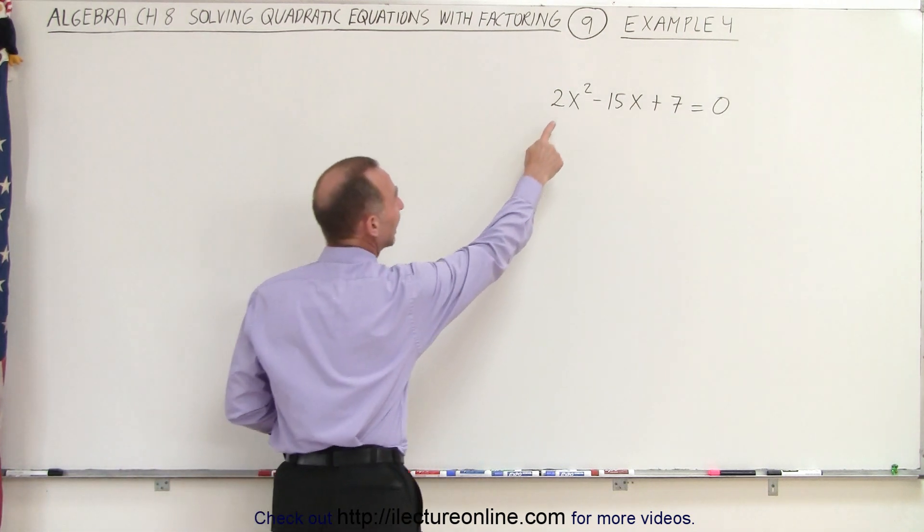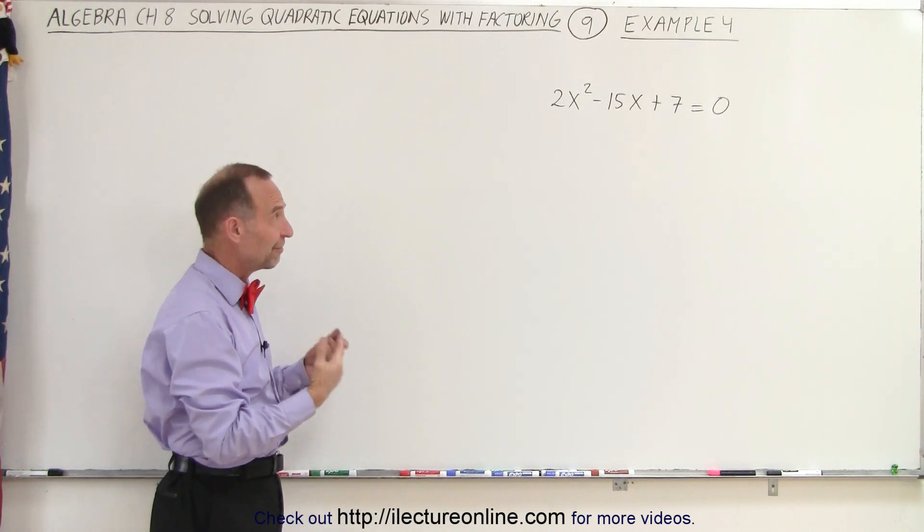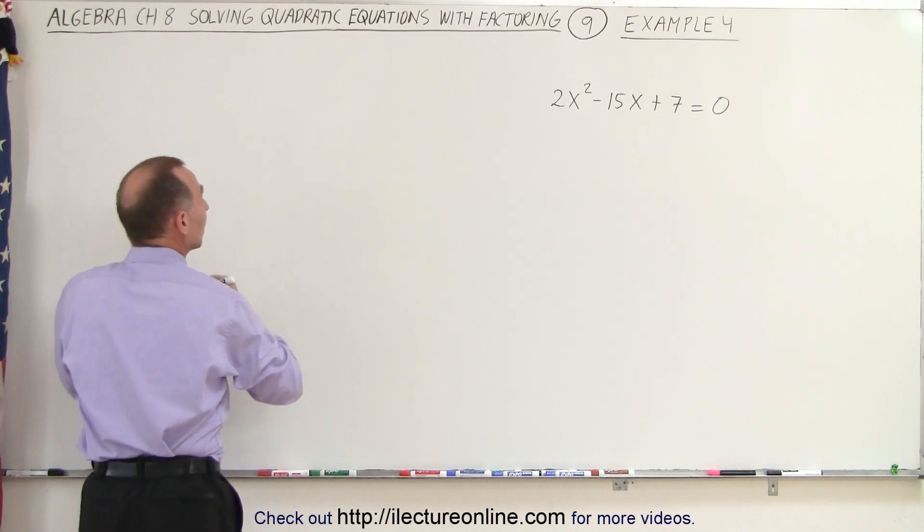We don't have a 1 in front of the x squared term, which makes it a little bit more difficult to try and factor it. So we may want to use the FOIL method.